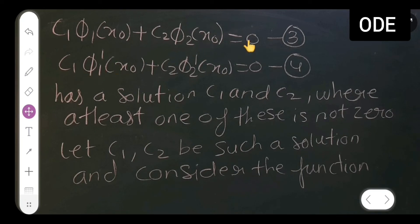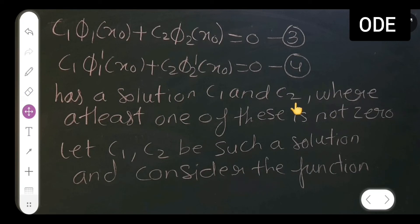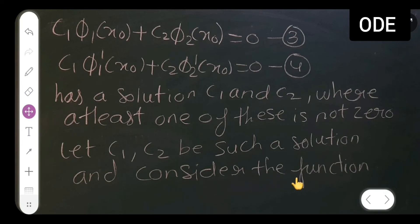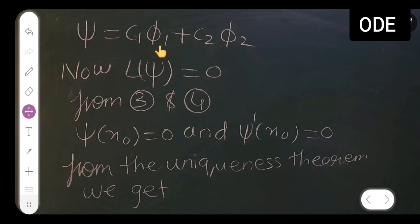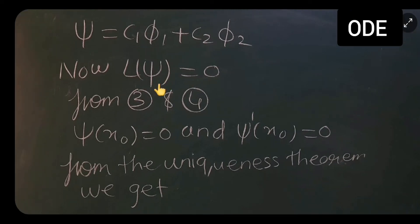Differentiating gives c1·phi 1'(x₀) + c2·phi 2'(x₀) = 0 — equation (4). This system has a solution c1, c2 where at least one of them is not zero. Let c1 and c2 be such a solution, and consider the function psi = c1·phi 1 + c2·phi 2. Then L(psi) = 0.